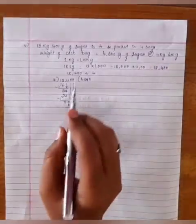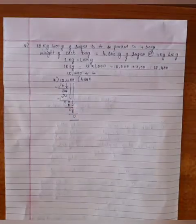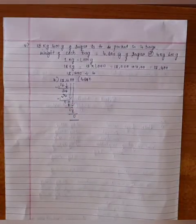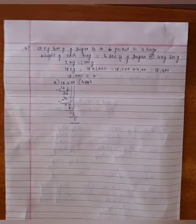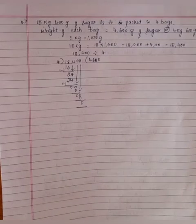Therefore weight of each bag contains 4600g of sugar, or 4kg 600g. You know that 1kg equals 1000g.